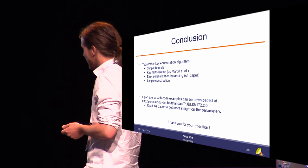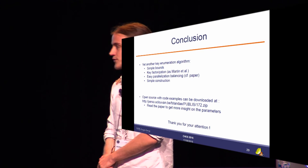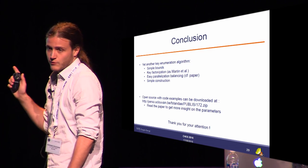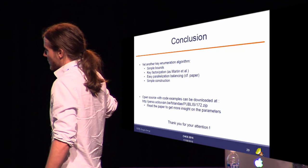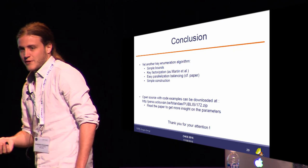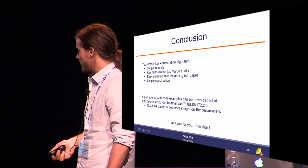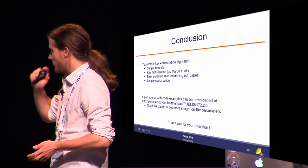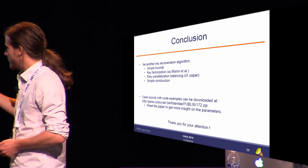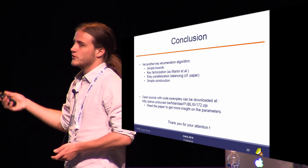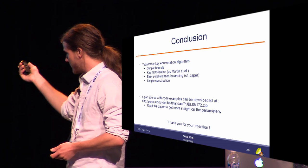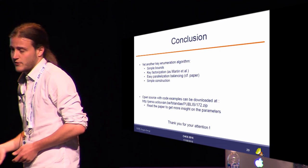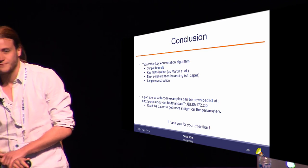As a conclusion, we've developed a key enumeration algorithm with simple bounds, key factorization (shared also by Martin et al.), and easy parallelization — though details require reading the paper. The algorithm is conceptually simple: histogram, convolution, and backtrack. An open-source C++ implementation is available for download along with the rank estimation algorithm. Read the paper before using it, as there are additional parameters not described here. Thank you for your attention.